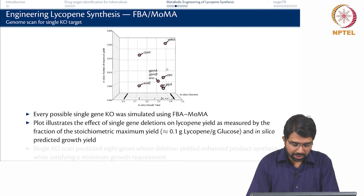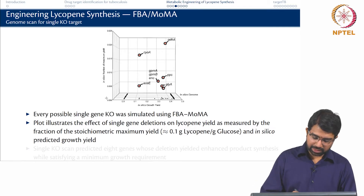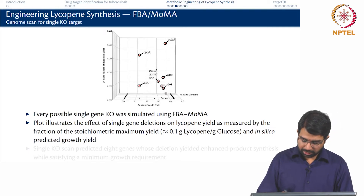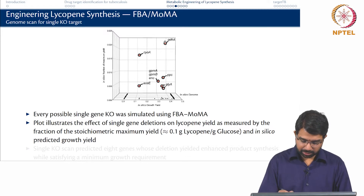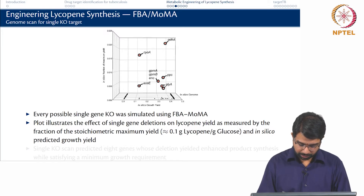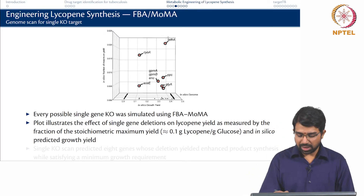The plot illustrates the effect of single gene deletions. The y-axis is the in silico fraction of maximum yield and the x-axis is in silico growth rate. You see that sometimes growth is very high, sometimes lycopene is low — here both growth and lycopene are low, whereas here both are reasonably high. So gdhA is a good knockout.